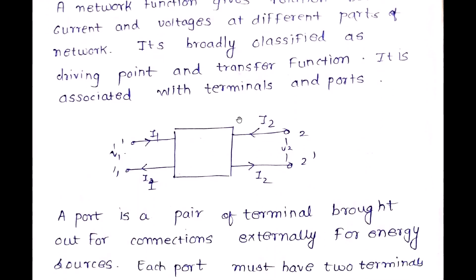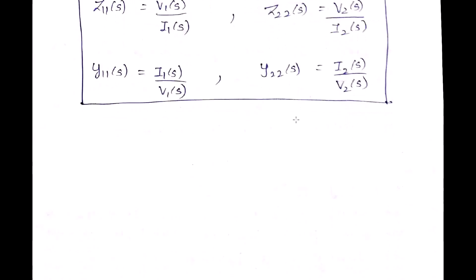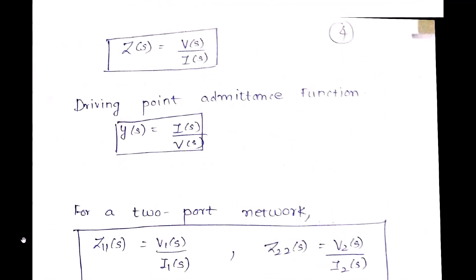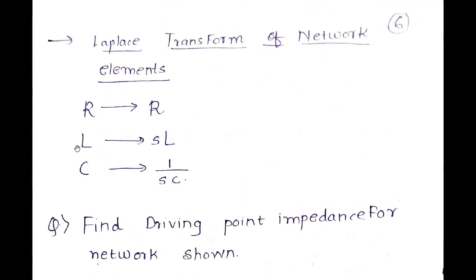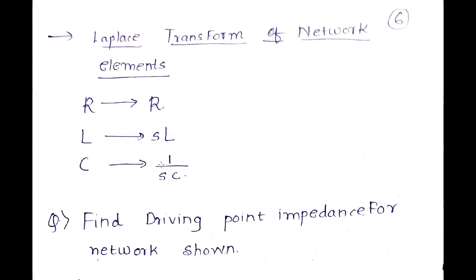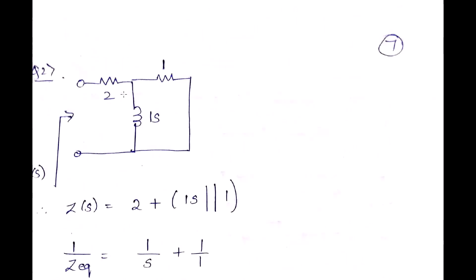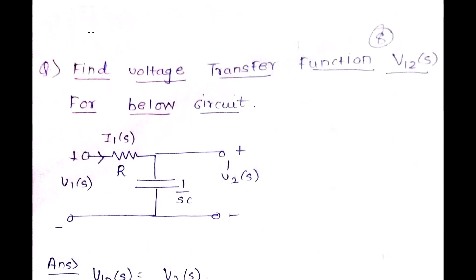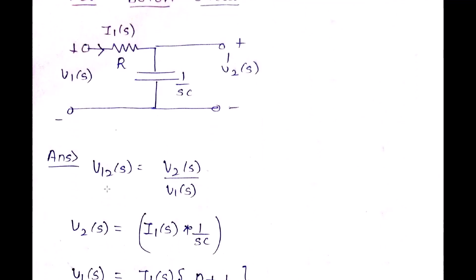To recap: a two-port network has driving point functions and transfer functions. A driving point function is always measured at the same port, while the transfer function involves two different ports. Network element Laplace values: R = R, L = sL, C = 1/(sC). For a voltage transfer function, the second subscript indicates the output port and the first subscript indicates the input port.